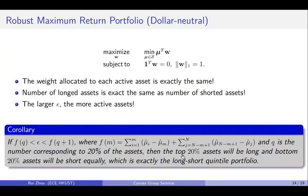This lemma tells us that in the dollar-neutral case, the weight allocated to its active assets is still exactly the same, and the number of long assets is exactly the same as that of the short assets, and the larger uncertainty level, the more active assets. So now we know the long-short quintile portfolio is still a special case of this optimal solution when the uncertainty level is within this range.